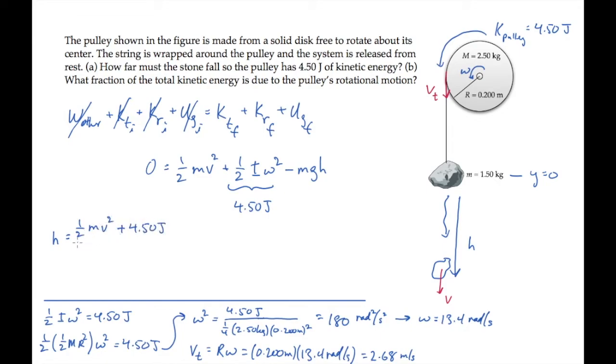It equals this expression. Substitute all the known values and calculate to see that the stone falls a distance of 0.673 meters when the pulley has acquired four and a half joules of kinetic energy. And that's the answer to part A.